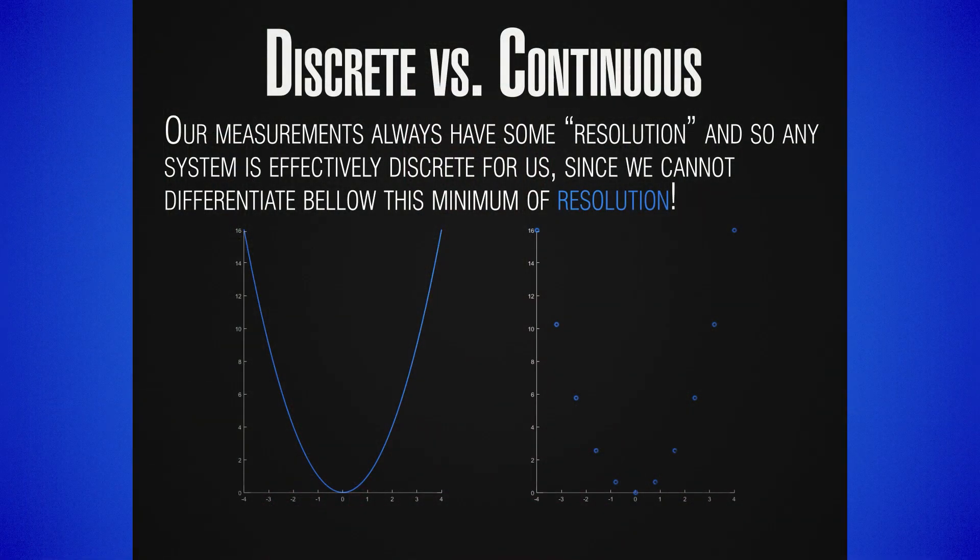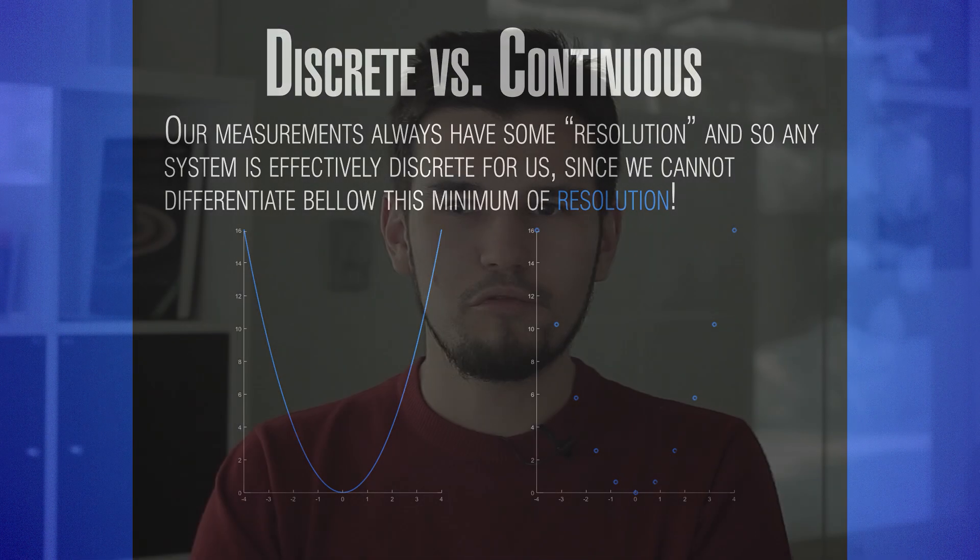Effectively, any signal would be discrete because we only have discrete intervals in which we can measure, defined by our resolution and our ability to differentiate between two levels. In the discrete case we have a finite number of points, whereas in the continuous case we have infinitely many, infinitely closely packed points. The answer to going between the two is a procedure known as digitalization.